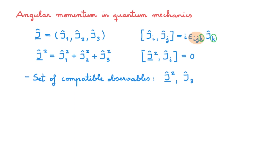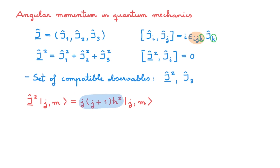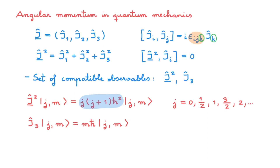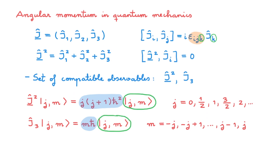From the video on the eigenvalues of a general angular momentum, which you can find linked in the description, we know what the eigenvalue equations of j squared and j3 are. For j squared, we have the eigenvalue equation where the eigenvalue is j times j plus 1 h-bar squared, and j can take values from minus j up to j in steps of 1. The common eigenstates are labelled by j and m, and these results only depend on the defining commutation relations for the general angular momentum.